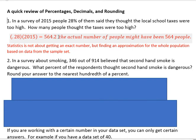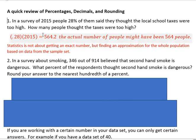Now, if they ask you to round that answer to the nearest tenth, you could leave it that way. But we don't ever have two tenths of a person. So sometimes when we're asked a question like this, we would say the actual number of people might have been 564 or it might have been 565, because the truth is statistics is not about getting an exact number. Finding an approximation for the whole population based on the data from the sample set is what we're all about. So if we say it's 564, it could be 564 or 565 — it's not exact.